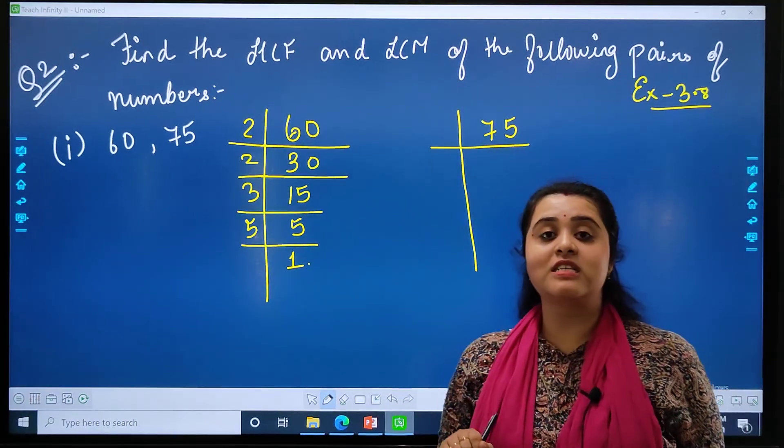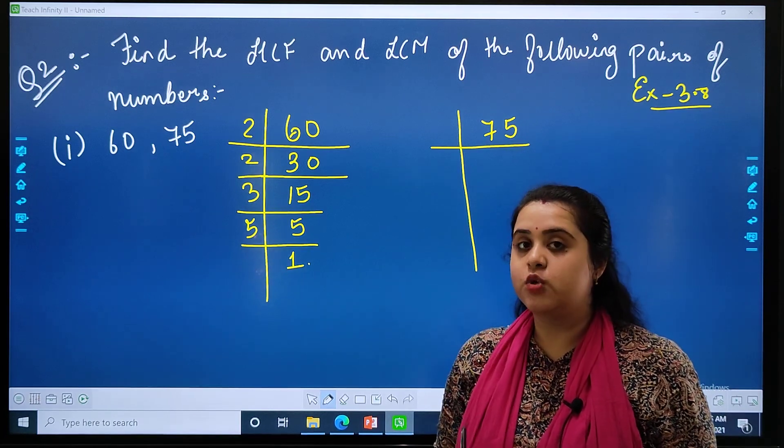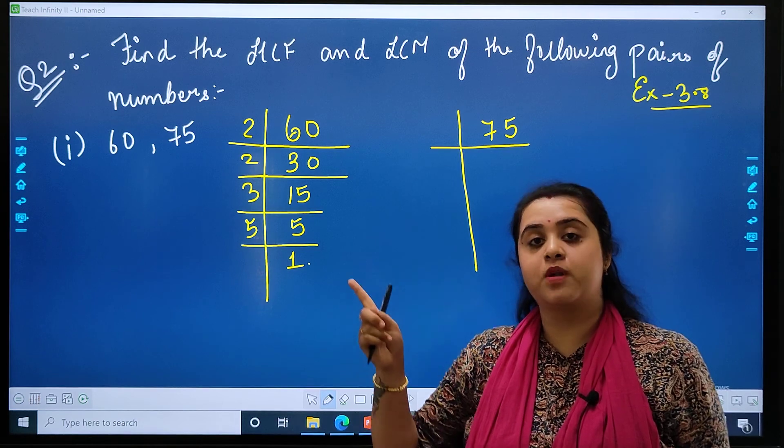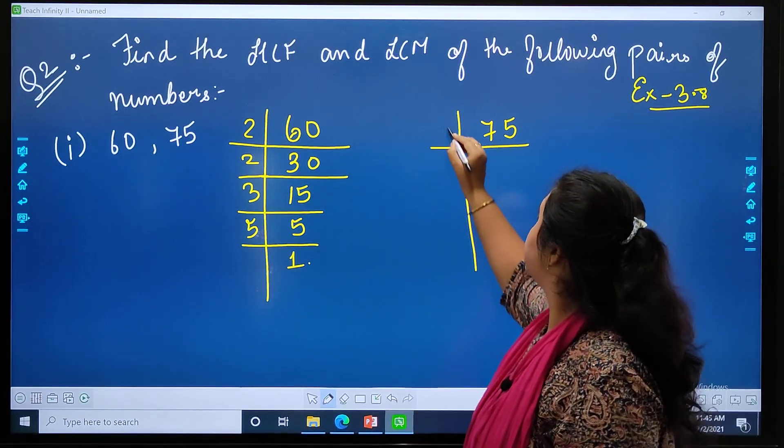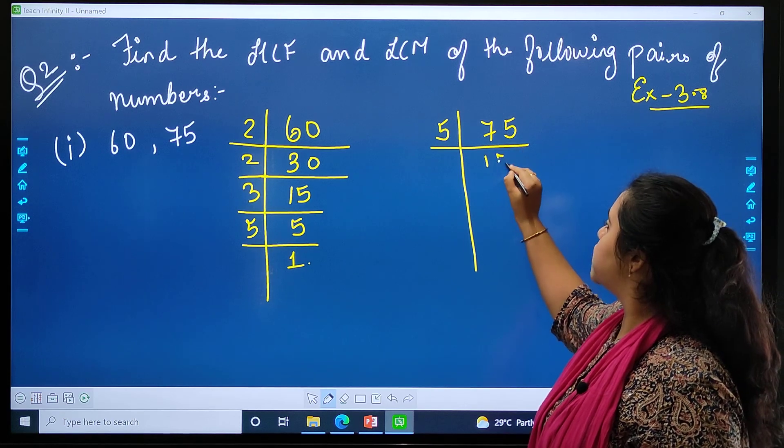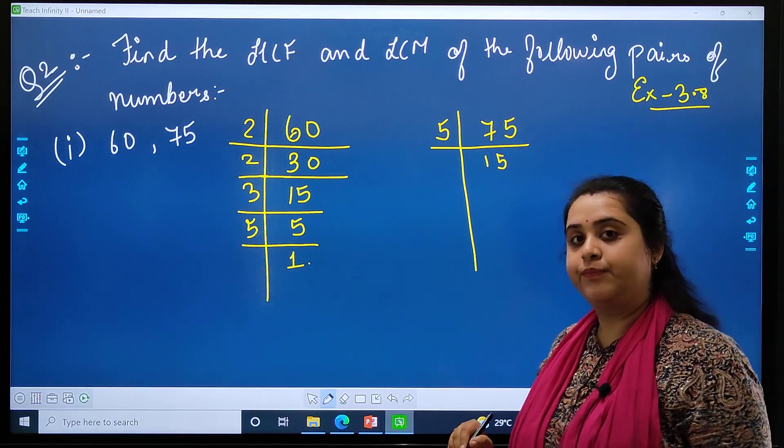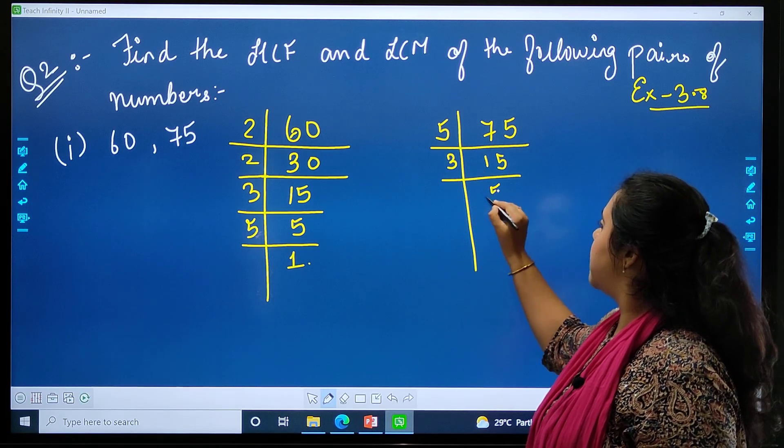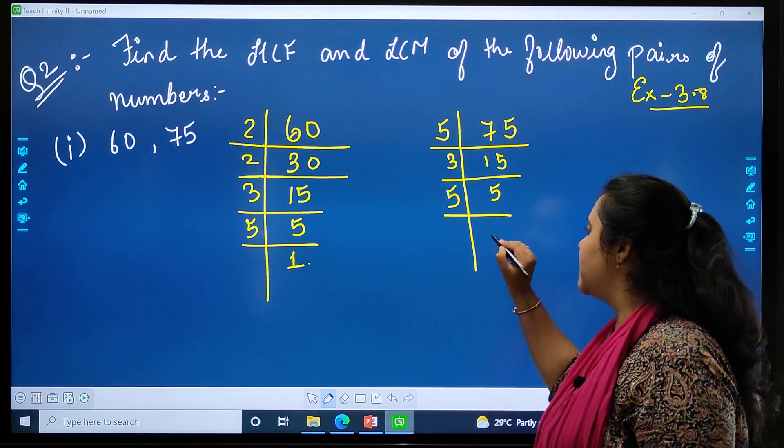Now, the second number is 75. As you can see, 5 is at the end, so 75 is divisible by 5. 5 fifteens are 75, 5 is there, 3 will go there so it will become 15. 5 threes are 15, 5 ones are 5.